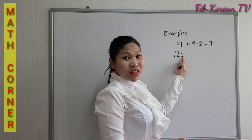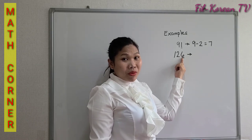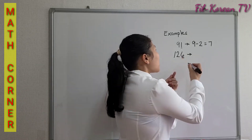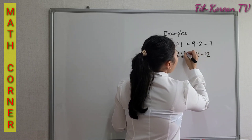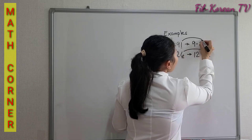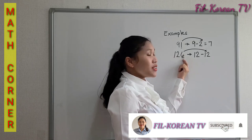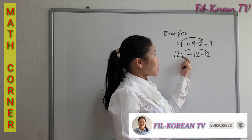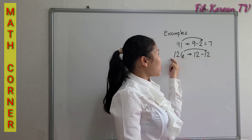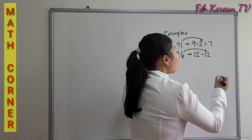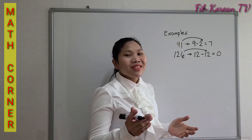For 126, the last digit is 6. If we double 6 it will become 12. We subtract this from the remaining number, which is also 12. So 12 minus 12 equals 0. The answer is 0, therefore this number is divisible by 7.